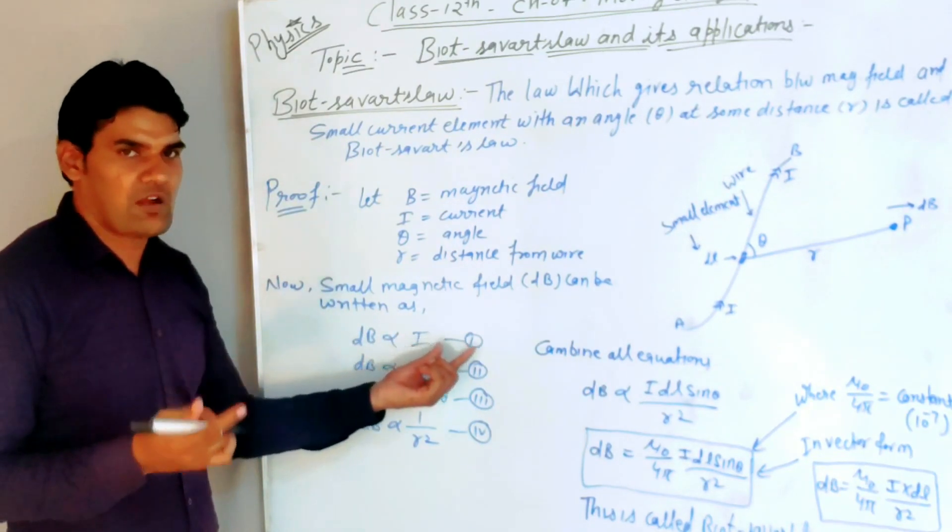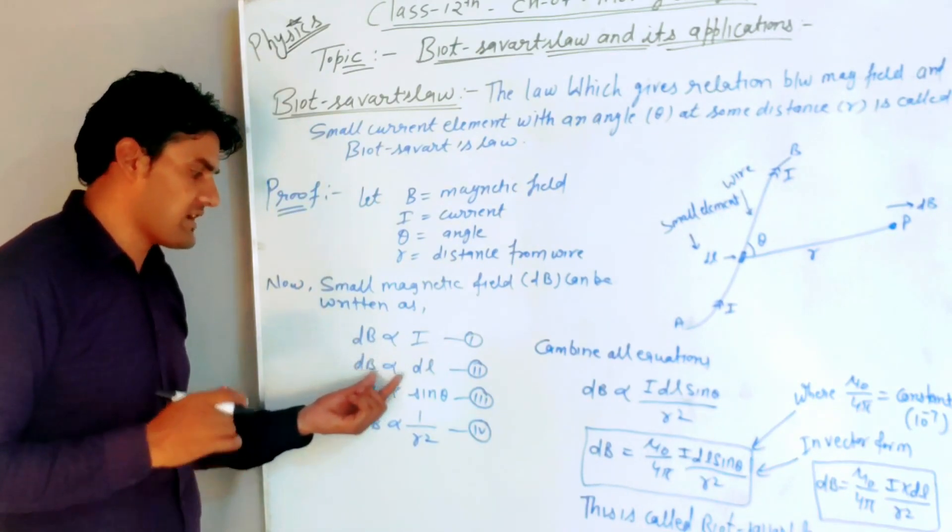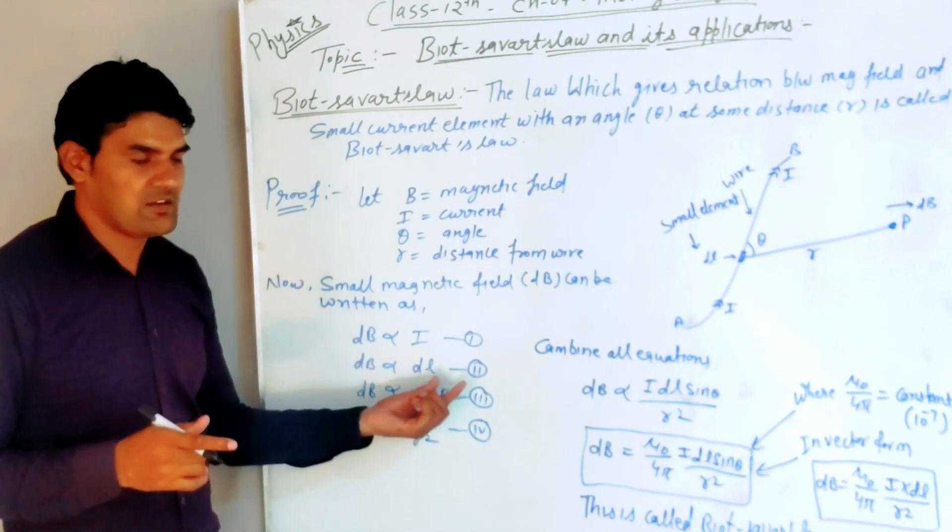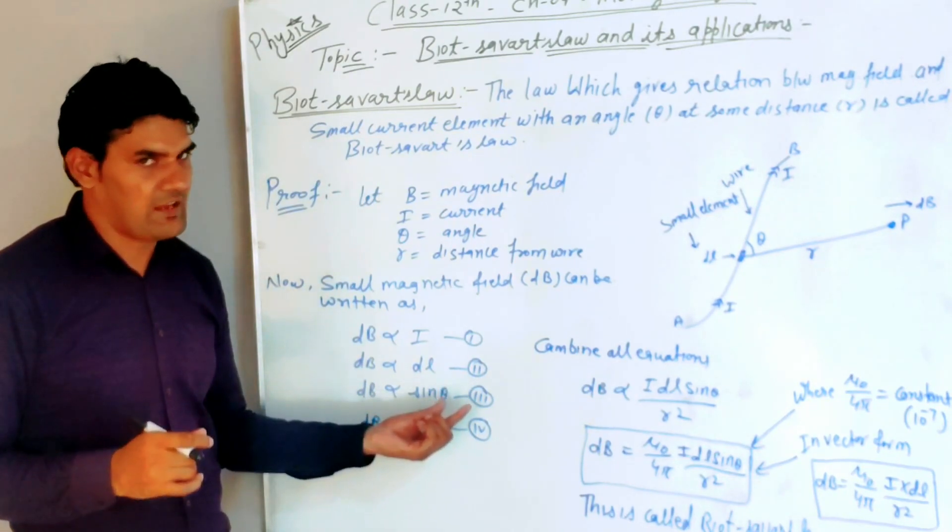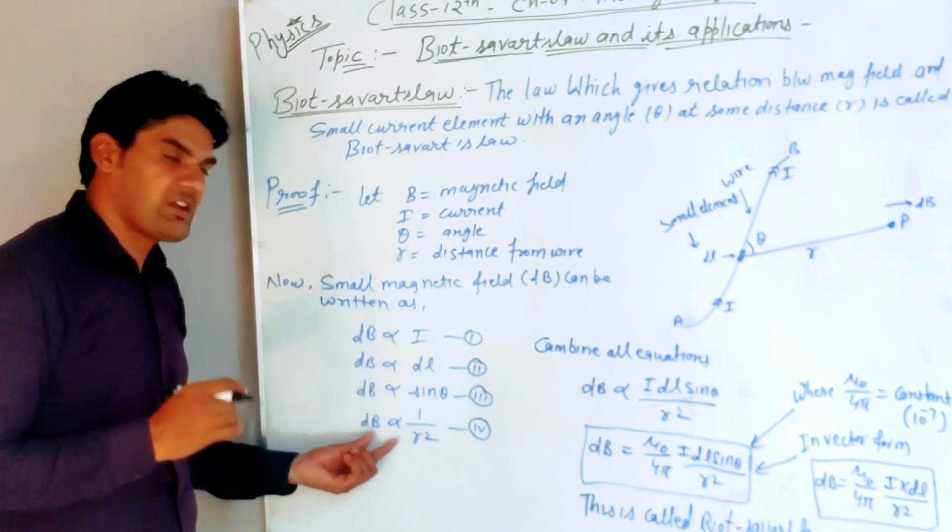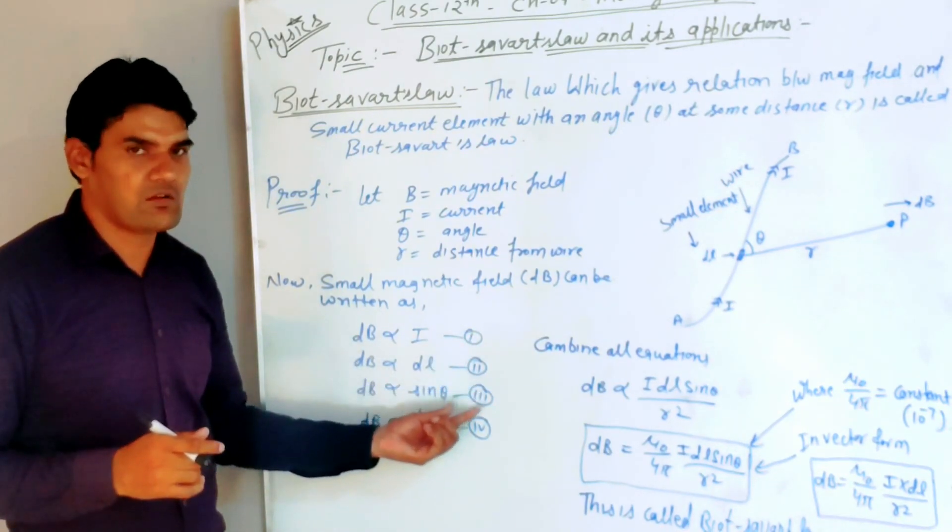dB is directly proportional to I. More current means more magnetic field. Second, dB is directly proportional to length dL. Third, dB is directly proportional to sin theta. Fourth, dB is inversely proportional to R squared. These are equations first, second, third, and fourth.